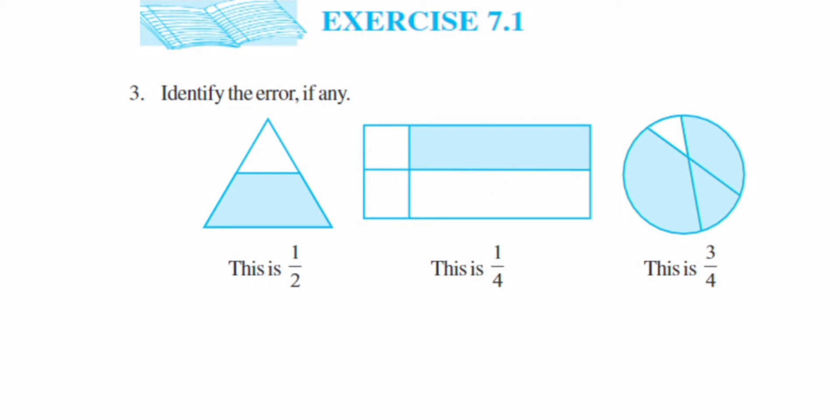So this fraction is also wrong. If you look at the third one, the circle, they have again divided it into four parts. If you divide into four parts, they have to be equal, but here all four parts are not equal. You can see that.